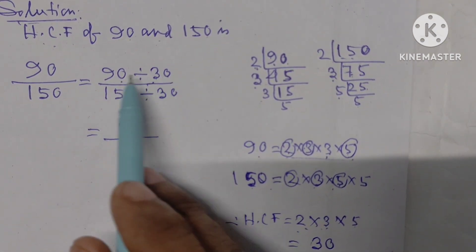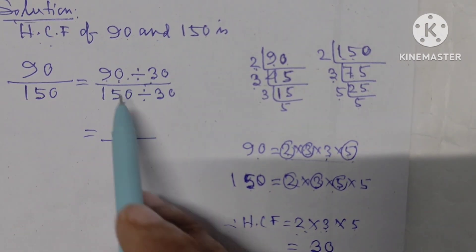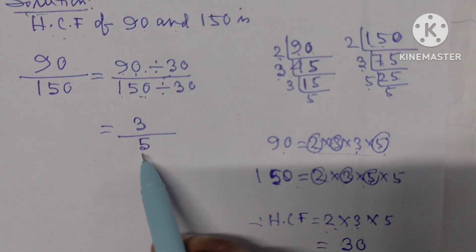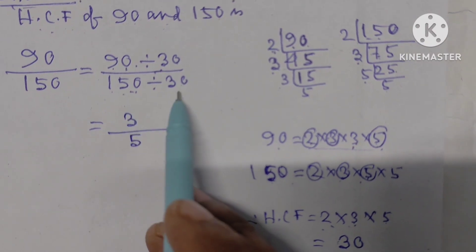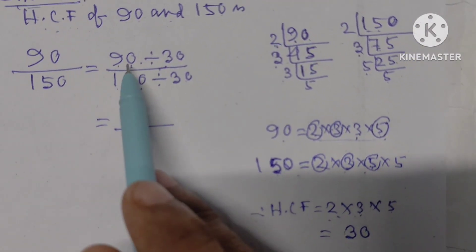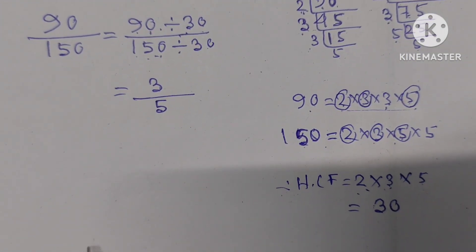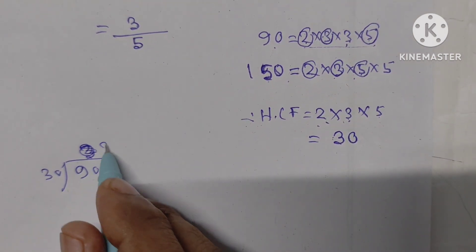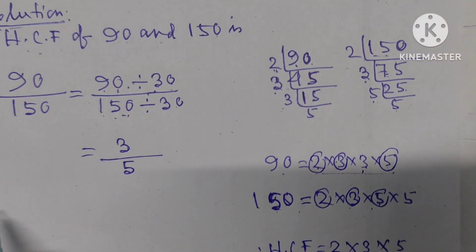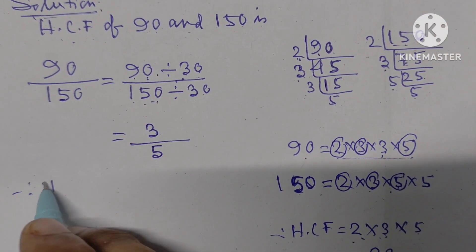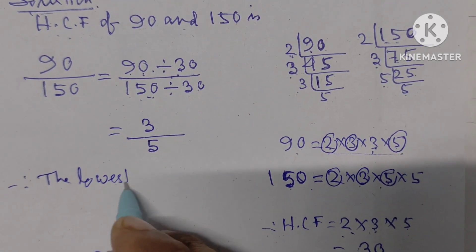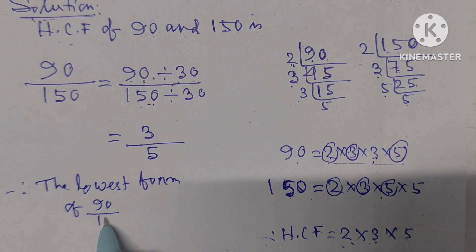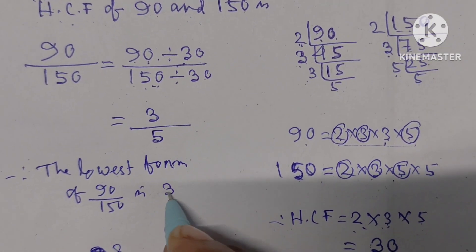A very simple way: cancel the zeros, then 9 is divisible by 3 giving 3, and 15 is divisible by 3 giving 5. You may also do this by dividing 150 by 30 and 90 by 30 using the division method. Therefore, the lowest form of 90 by 150 is 3 by 5.